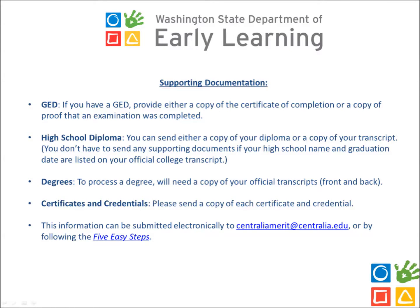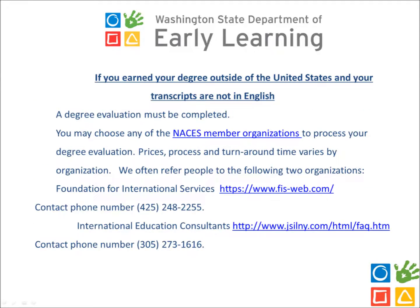Depending on the information you entered into the application, different types of supporting documents may be needed to process the application. Check your email or review the current slide to determine the degree or certificate information you will need to submit for review. If you earned your degree outside the United States or your documents are not in English, a degree equivalency or translation of your documents may be required. For specifics about this, please contact the Merit Help Desk at merit@del.wa.gov.